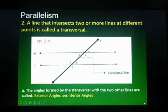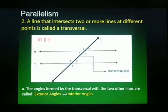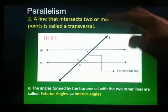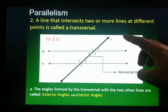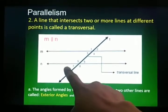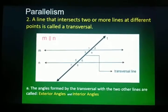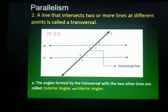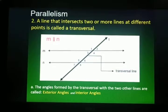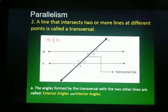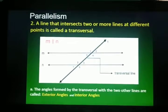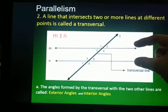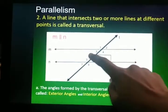Exterior angles are angles outside the parallel lines. So we have angle 1 and angle 2 — they are outside the parallel lines M and N. We also have angles 7 and 8. So exterior angles are angles 1, 2, 7, and 8. The opposite of exterior angles are the interior angles. Interior angles are angles inside the parallel lines. Inside them are angles 3, 4, 5, and 6.